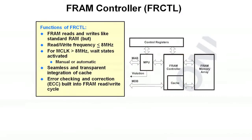Looking at the FRAM controller: the FRAM reads and writes just like standard RAM, but the read-write frequency tops out at about 8 megahertz. If you have an MCLK greater than 8 megahertz, you will activate wait states, either manually or automatically. Included in the current FRAM controller is a seamless and transparent integrated cache that allows you to access small loops with greater speed and flexibility without touching the FRAM at every single cycle.